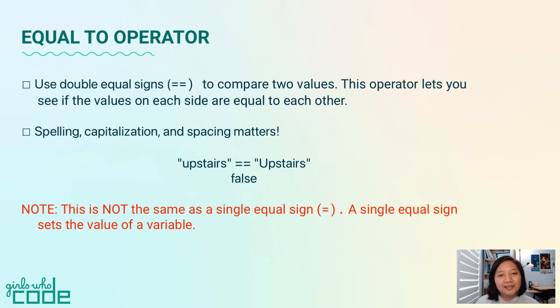We can use comparison operators like the greater than symbol to compare two values. We will be focusing on the double equal sign or the equal to operator. The double equal sign is comparing to see if the values on both sides are equal to each other.